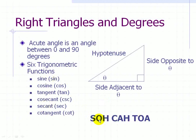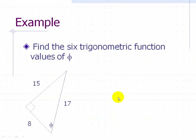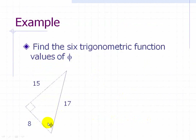Using the acronym SOHCAHTOA: sine is opposite over hypotenuse, cosine is adjacent over hypotenuse, and tangent is opposite over adjacent. We can then derive the other three functions from these definitions. Here's an example: find the six trigonometric function values of phi. Phi's adjacent side is 8, the hypotenuse is 17, and the opposite side is 15.